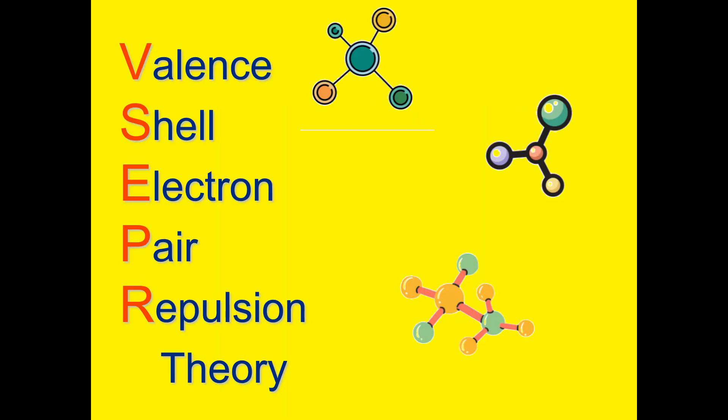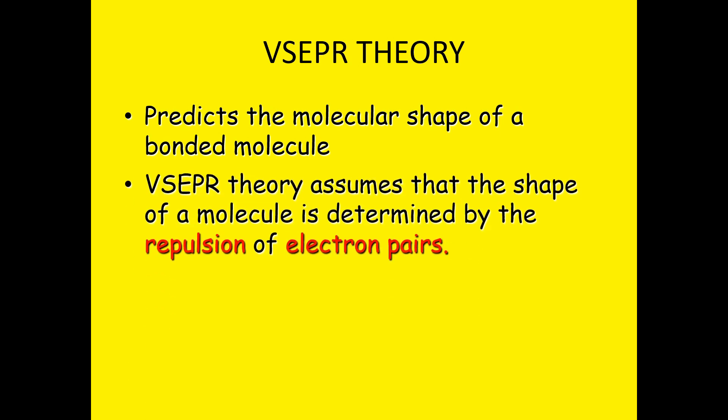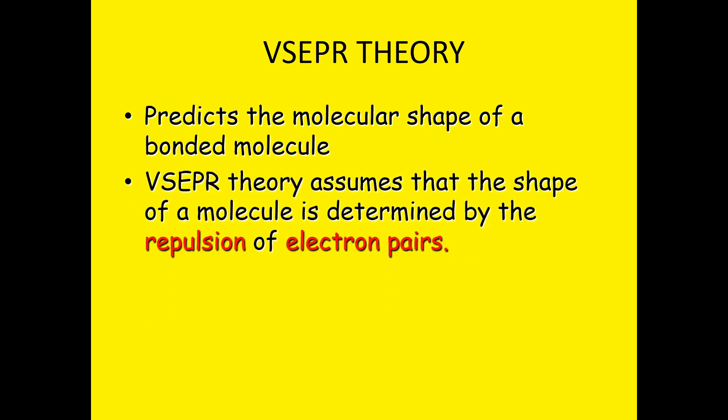And that's why it's called Valence Shell Electron Pair Repulsion Theory. VSEPR predicts the molecular shape of a bonded molecule. VSEPR theory assumes that the shape of the molecule is determined by the repulsion of electron pairs.